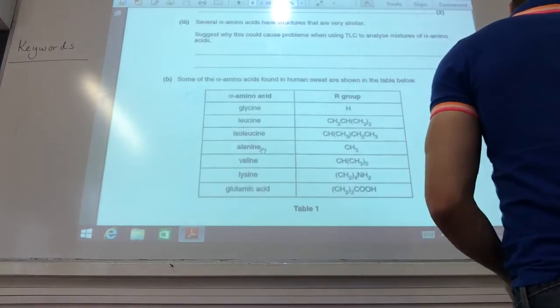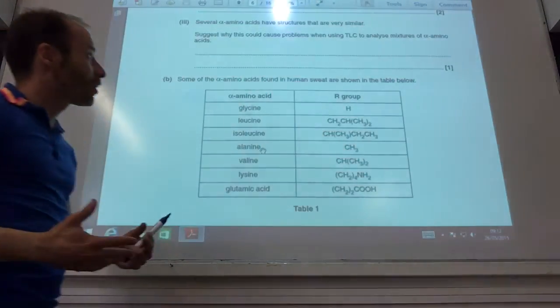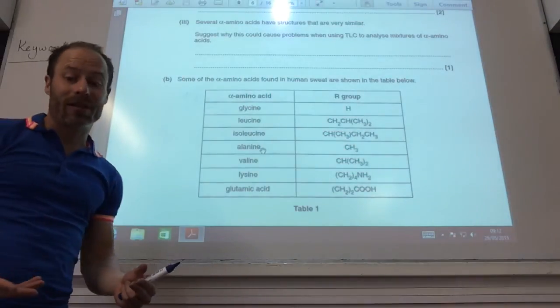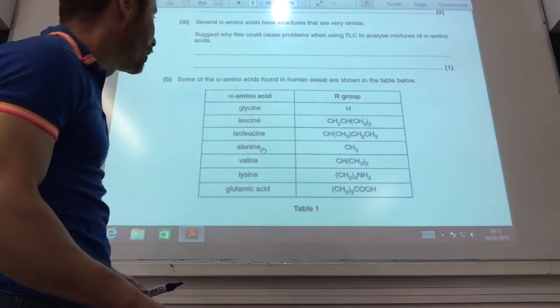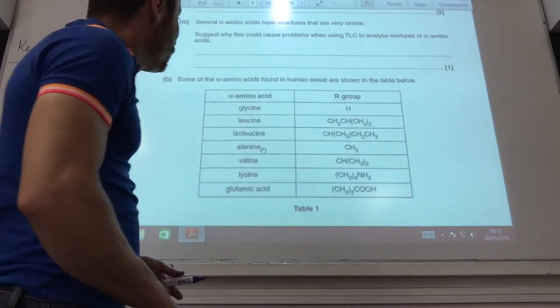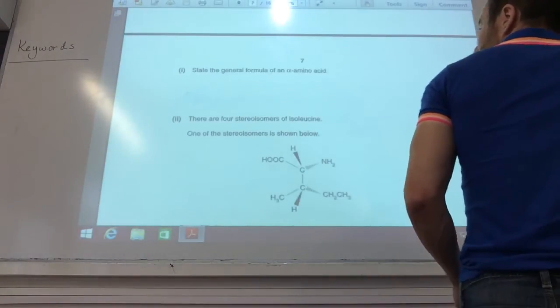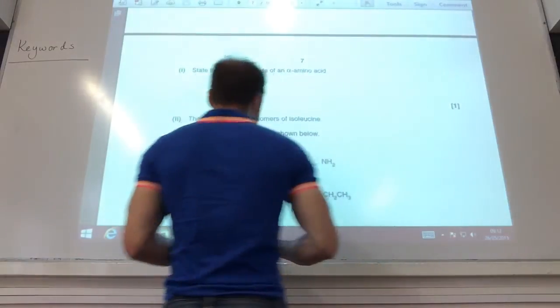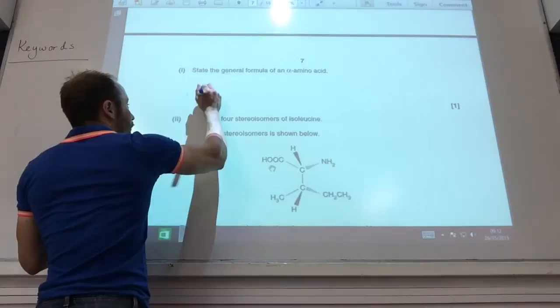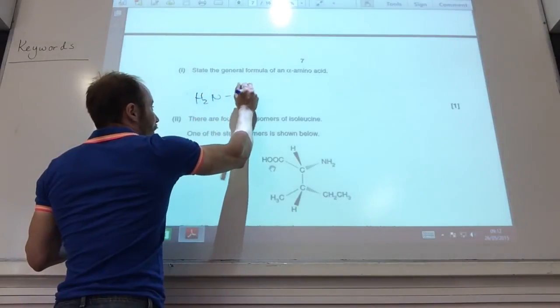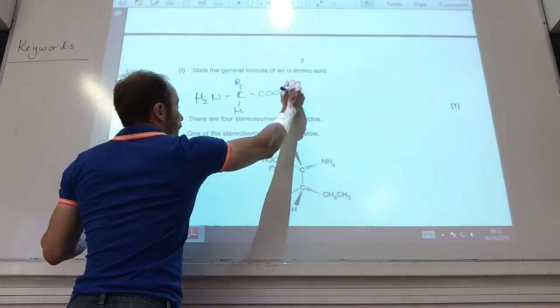Several amino acids have structures that are very similar. Suggest why that could cause problems. If they've got similar structures, they'd likely have similar RF values, so it'd be difficult to separate. They'd likely be at the same place on your TLC plate. State the general formula for alpha amino acids.